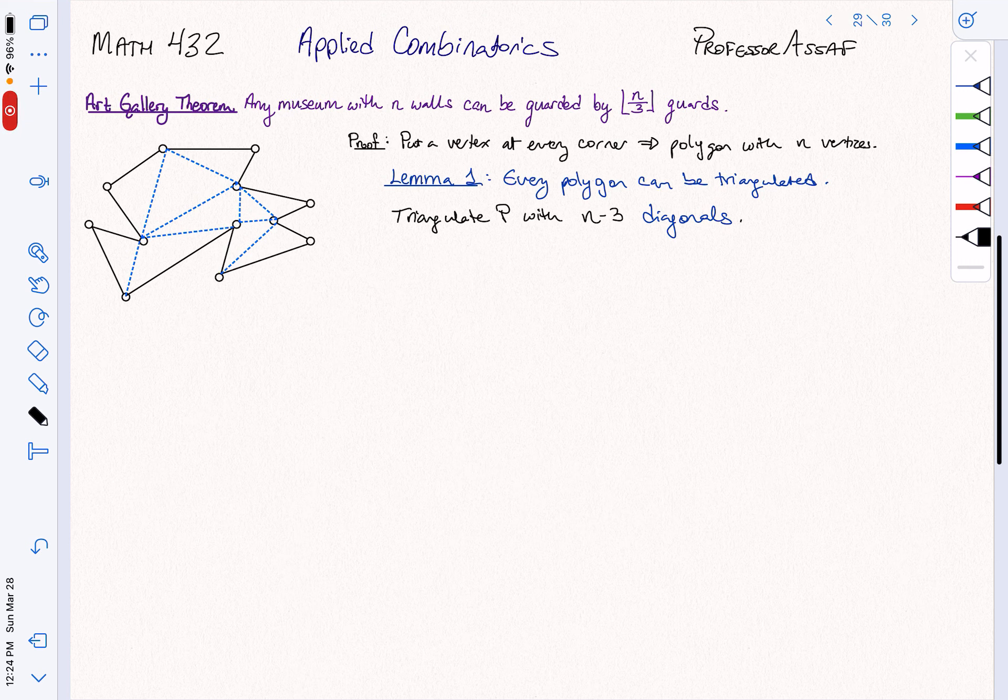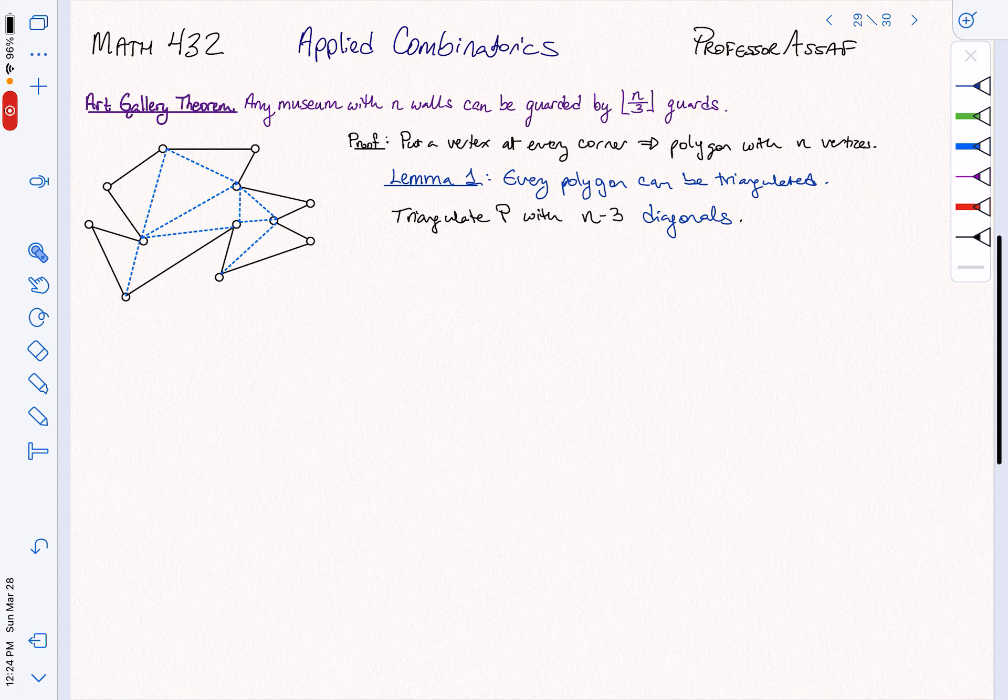So here we are in the midst of our proof of the art gallery theorem. The art gallery theorem, we have n walls in our gallery. So here's an example with 12 walls. And we want to prove that n over 3 guards suffices to guard this museum.